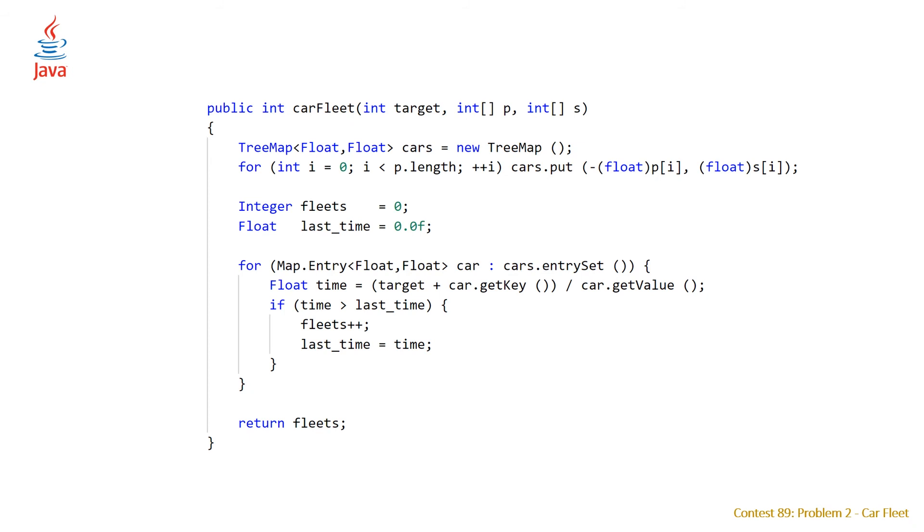Taking a look at our Java code, it's very similar, just some syntax differences. So the map in C++, the equivalent of that in Java is a tree map. And we have to declare float float here, and there's no implicit conversion. So we have to explicitly cast our integers to floats here. And then the equivalent of a range base for loop in Java is an enhanced for loop. It's not as clean the syntax, but it is the same thing. And we just have some different methods on our tree map. So instead of first and second, we have get key and get value. And the rest is the same, we just don't have the comma operator either. And once you've finished your enhanced for loop, you can just return fleets, and it does the same thing.